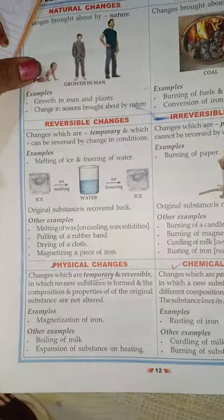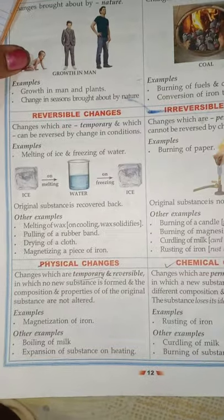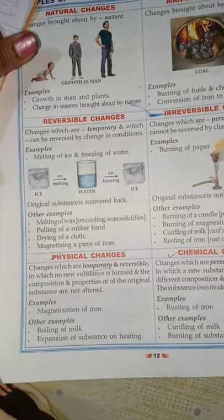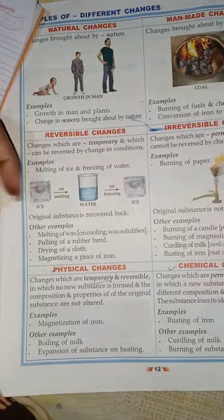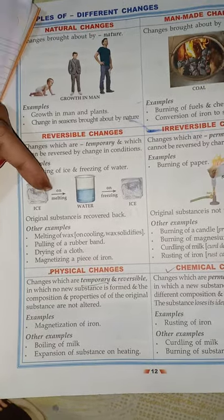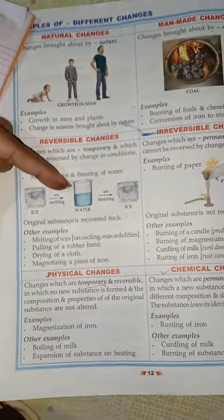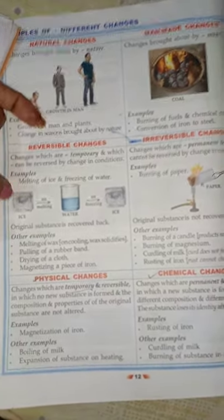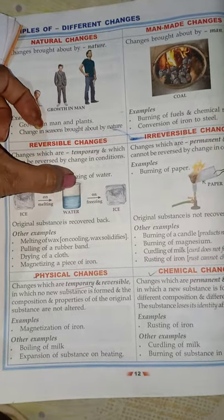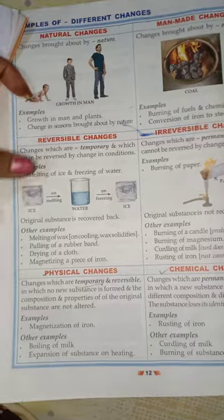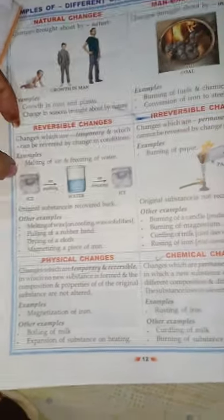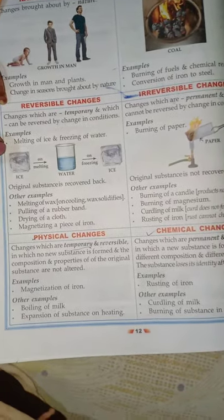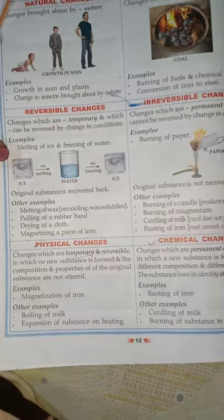Moving to reversible and irreversible change. Reversible changes are temporary and can be got back by reversing the conditions. For example, ice when subjected to melting gives water, and water when refrigerated changes back to ice again. The solid changes to liquid and liquid on refrigeration changes to ice back again. The same thing occurs in case of melting, pulling or stretching of a rubber band, drying of clothes, and magnetizing a piece of iron.